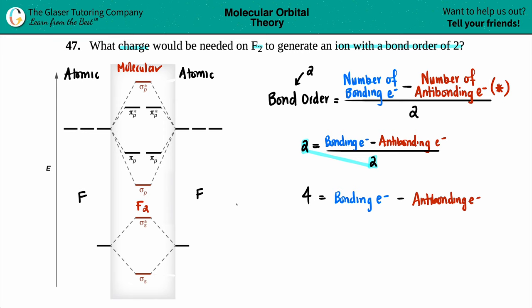Let's just see what's going on without a charge, if I was just dealing with F2. So keep in mind that fluorine has on the periodic table seven valence electrons. So that means seven electrons on the left, seven electrons on the right. And you got to start from the bottom and go up in energy to fill your electrons.